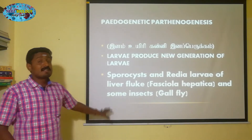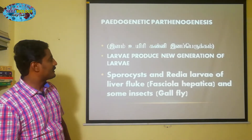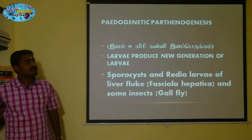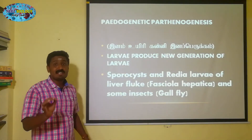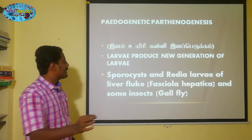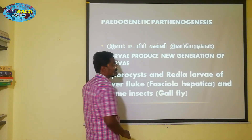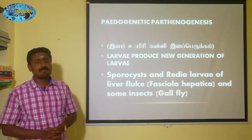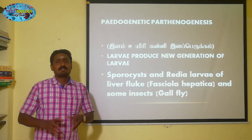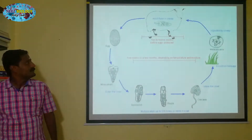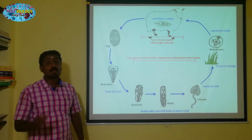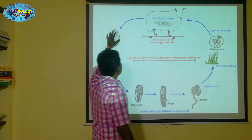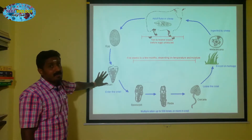What organism is there? Let's talk about liver fluke — that's called Fasciola hepatica. This Fasciola hepatica is one of the animals found in the liver. If you look at it, there is a large larva formation.